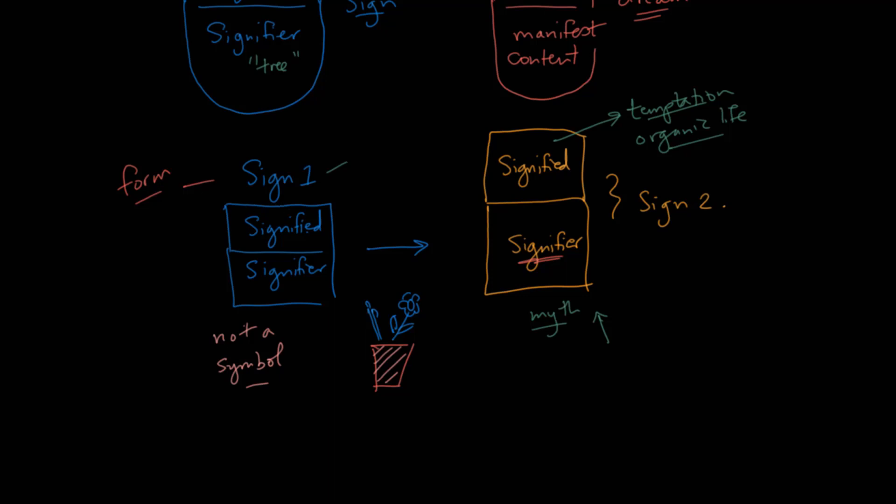The other parts of the language here are that sign two here, the signified, can now be called the concept. So this part calls the concept from now on. It's the signified in the myth, and if you think about part one, for instance, we talk about wrestling, right? What does wrestling mean as a concept? Well, it means spectacle. That would be an example. And then finally all of sign two, so the whole thing here is what he calls the signification, the signification.